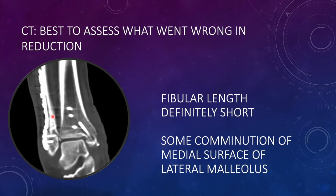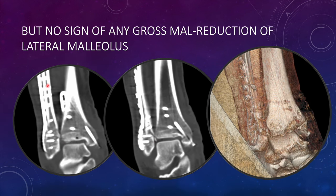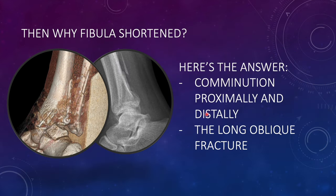A CT was ordered, as CT is the best tool to assess malreduction. In the coronal cut there is no gross malreduction — only some comminution is visible. Other cuts also show no gross malreduction, but shortening is still present and the space is definitely increased. In the 3D cut, plate position appears satisfactory and surfaces appear somewhat adequately reduced, but there is comminution at the terminal fracture spike. The fibula shortened without obvious CT evidence because comminution in both the proximal and distal parts caused shortening, and the long oblique fracture pattern has an inherent tendency toward shortening.